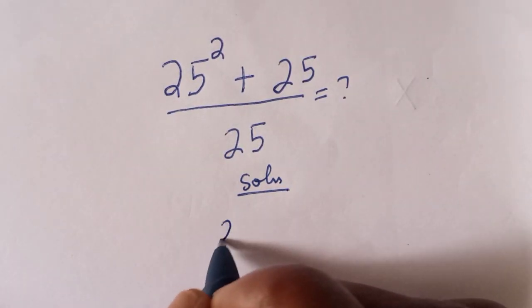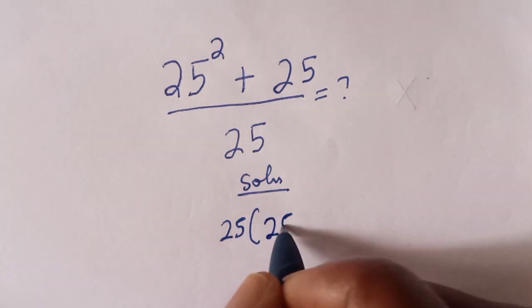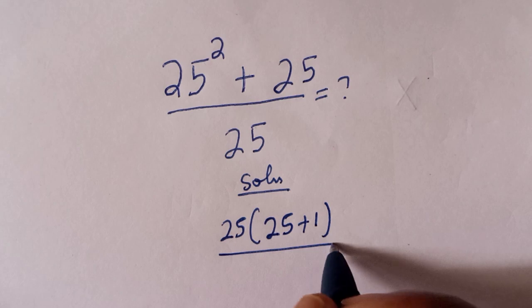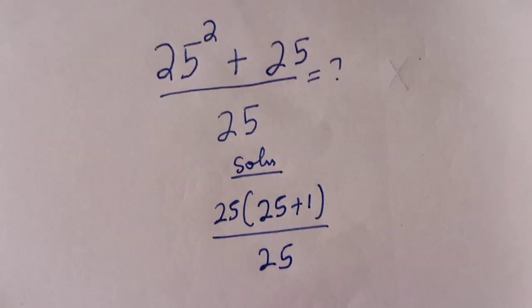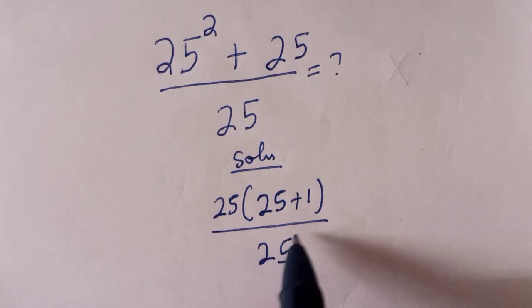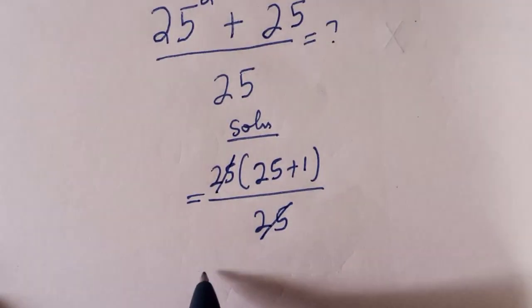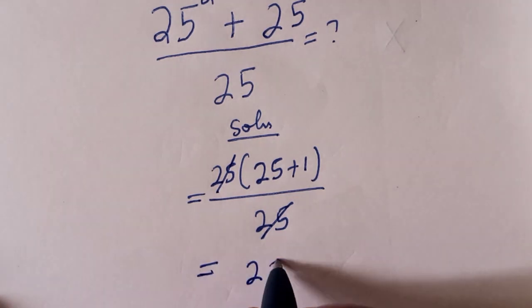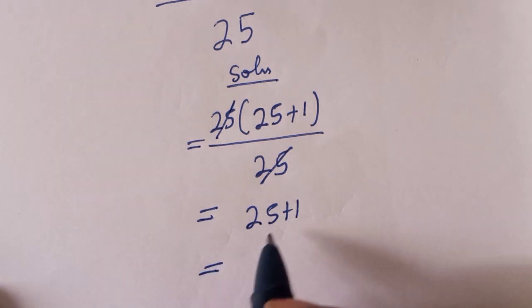bring 25 out. We have 25 bracket (25 plus 1) divided by 25. And if you look at this, this one will cancel this. This is equal to 25 plus 1, and 25 plus 1 is equal to what?